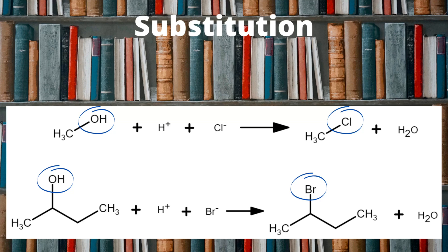This final slide reinforces what actually changes on the organic molecule in this substitution reaction. All that happens is the OH group is swapped for the relevant halogen, based on the halide ion used as the reactant. In the first example, the OH simply swaps for Cl — the rest of the molecule stays completely the same. It's far more straightforward than the elimination of water reactions covered earlier in this tutorial.